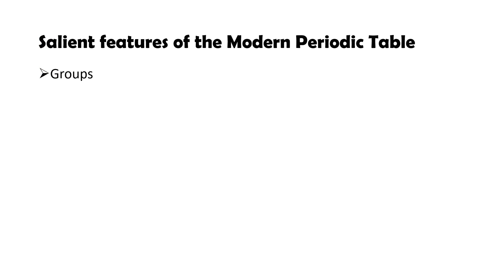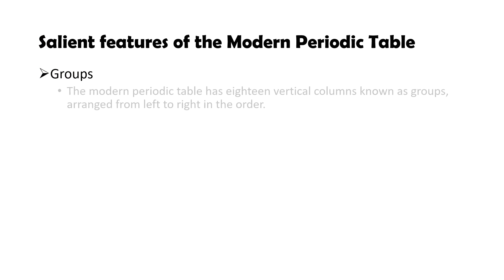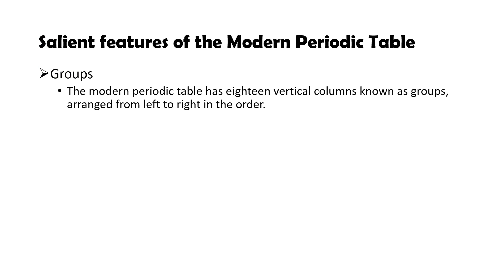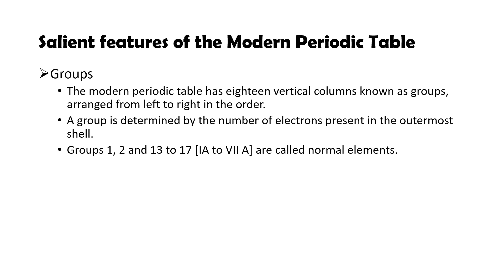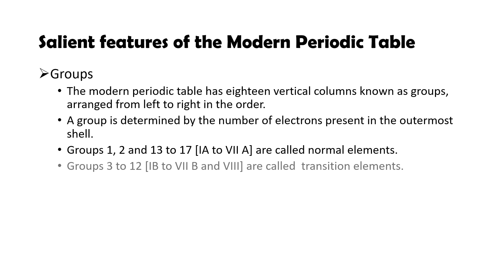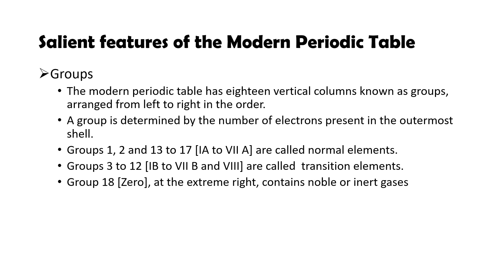A group is determined by the number of electrons present in the outermost shell. Elements in groups 1, 2, and 13 to 17 are called normal elements. Elements in groups 3 to 12 are called transition elements, and group 18 at the extreme right contains noble or inert gases. Reactive metals are placed in groups 1 and 2, transition element metals are placed in the middle, and non-metals are placed in the upper right corner of the periodic table.